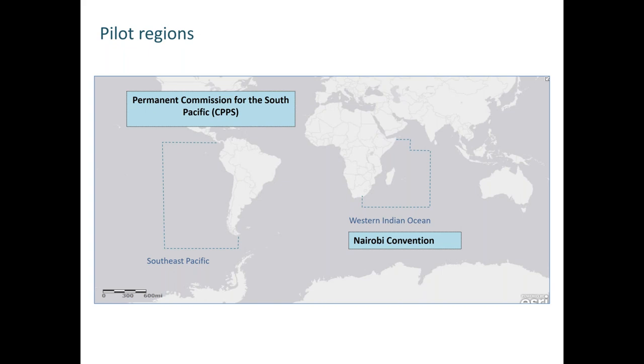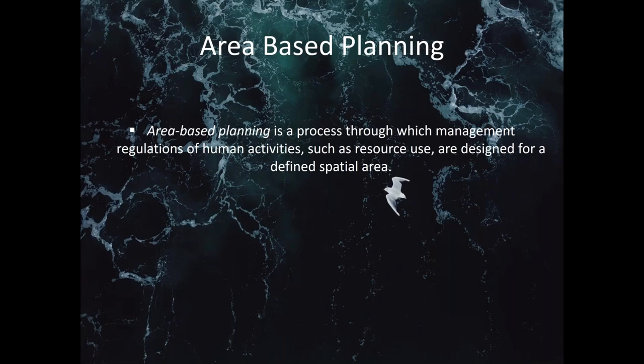Component four of this project aims to identify and test area-based planning methodologies within the regions. In its simplest form, area-based planning can refer to the first step in the spatial management of a single resource or resource use activity. Expanding the concept further, area-based planning can also refer to integrated planning across multiple different resource use activities, which would be described as cross-sectoral planning.